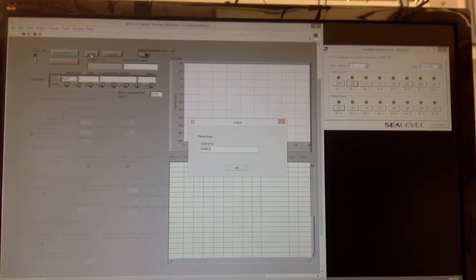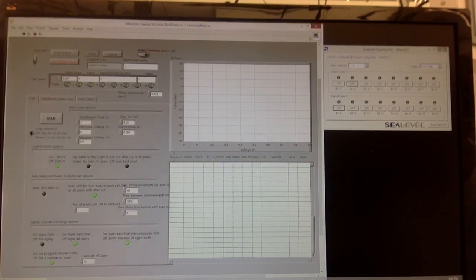After that, we'll edit our scan settings, such as the pixel area, voltage range, and voltage step size, among others. Please read through the JV SOP and PV module for detailed descriptions of the scan settings.